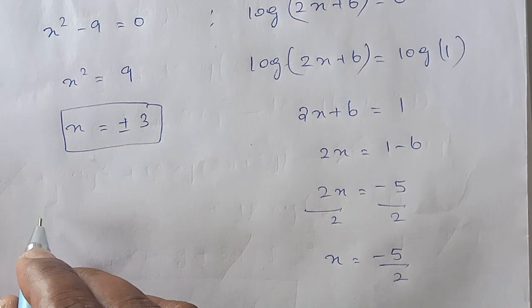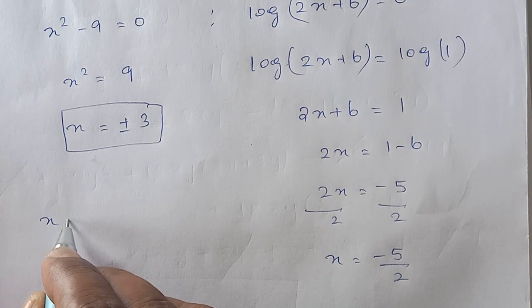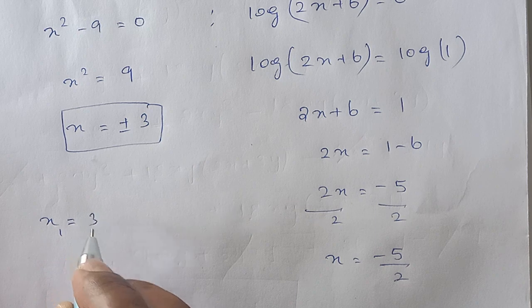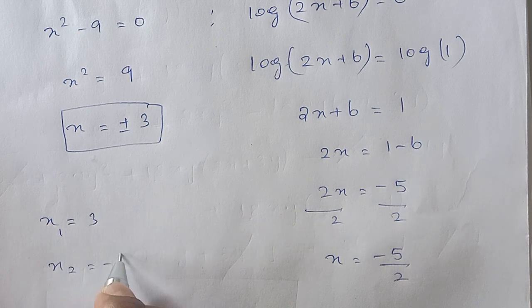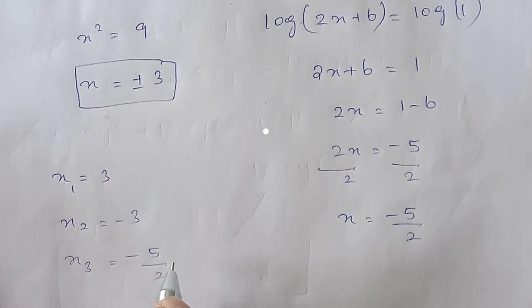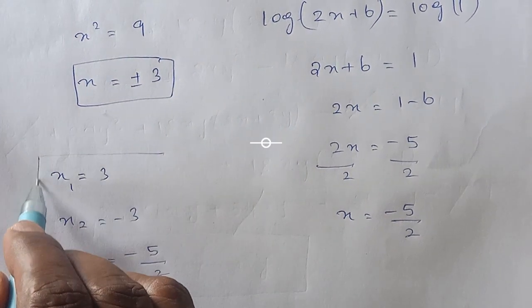So the 3 roots are: x1 is equal to 3, x2 is equal to minus 3, and x3 is equal to minus 5 by 2. These are the 3 roots.